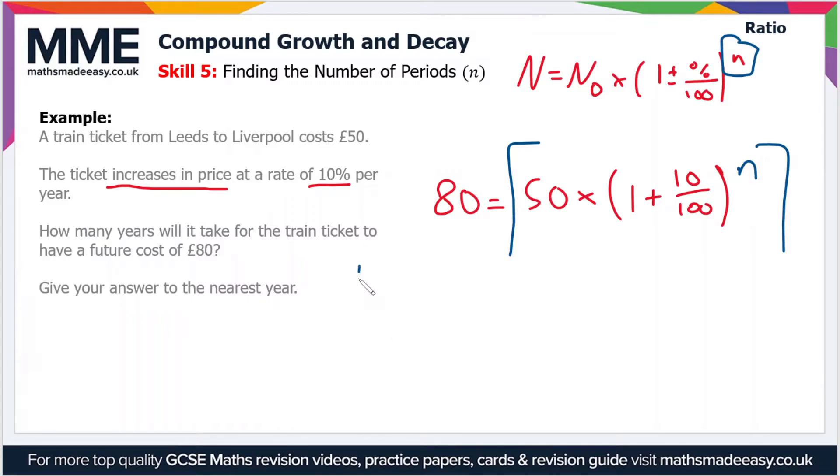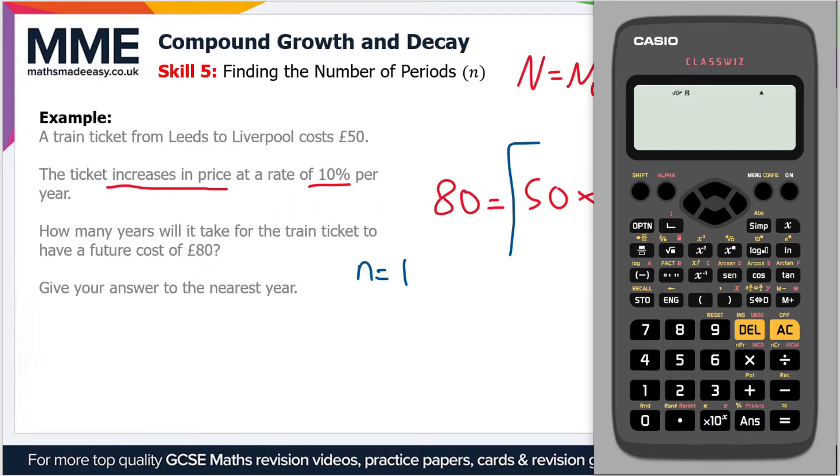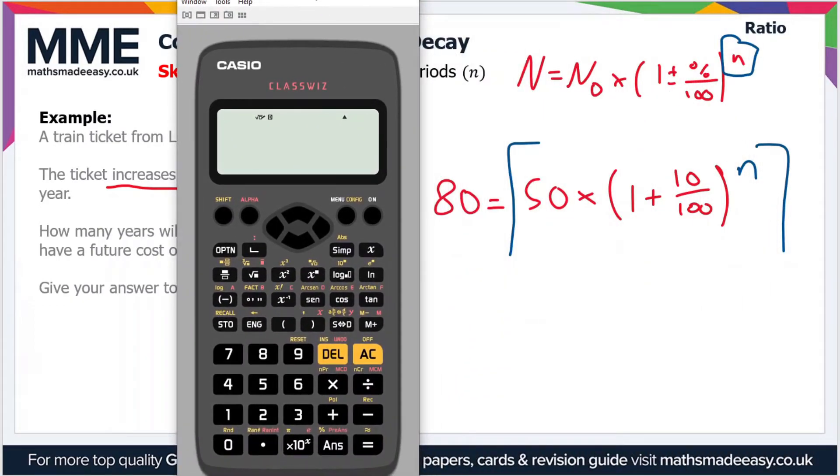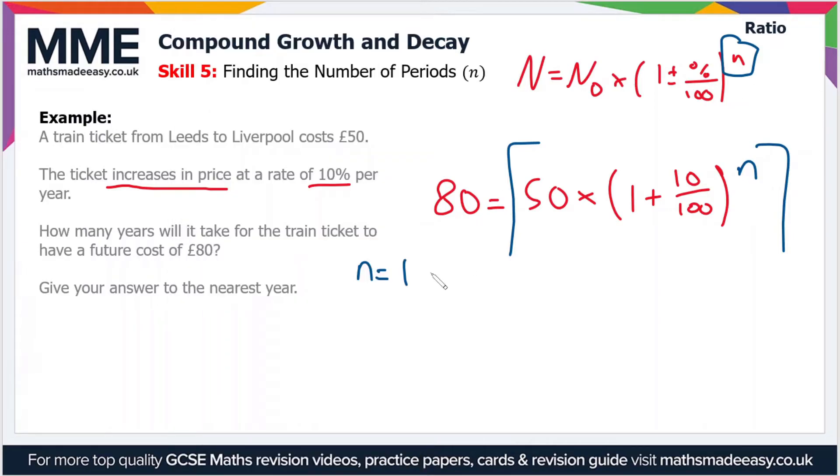So let's start with n equals 1. So if we put everything into the calculator, I'll just move this across. So we have 50 times 1 plus 10 over 100, close the brackets, and that's just to the power 1 for now.